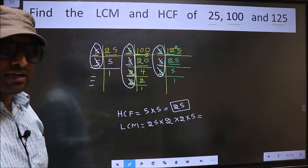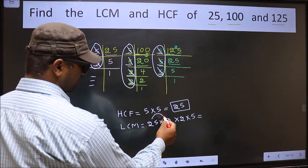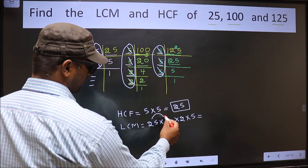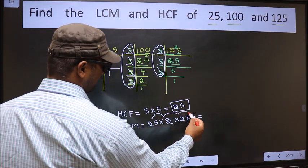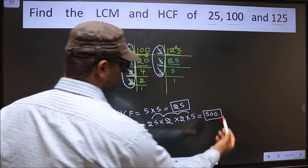Therefore, our LCM is 25 into 2, 50, into 2, 100, into 5, 500 is our LCM.